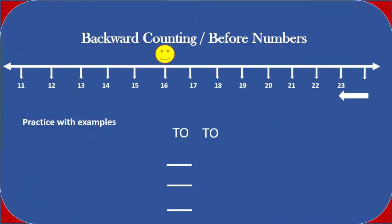Now let us see some examples. Number sixteen — we can see that there is a blank space before the number sixteen. That means we have to go backwards, or on the left side of the number line. Now we can see that the smiley face is on number sixteen.